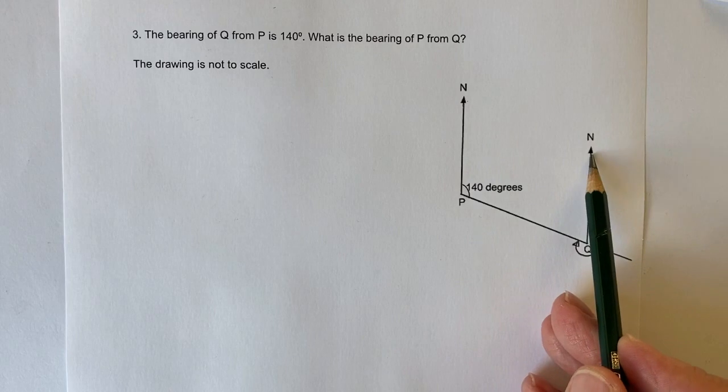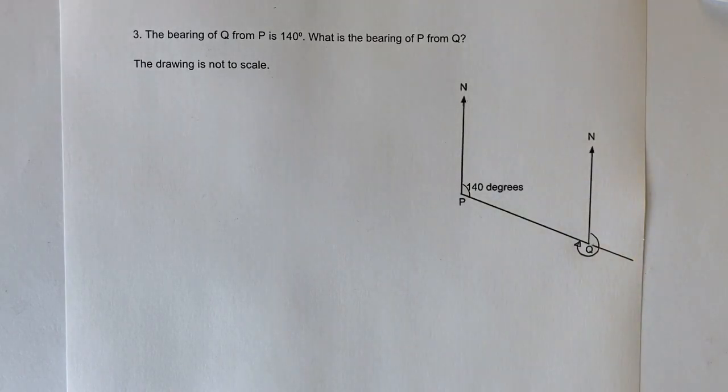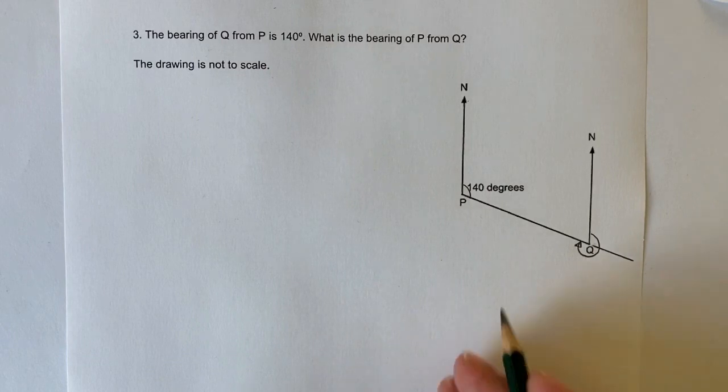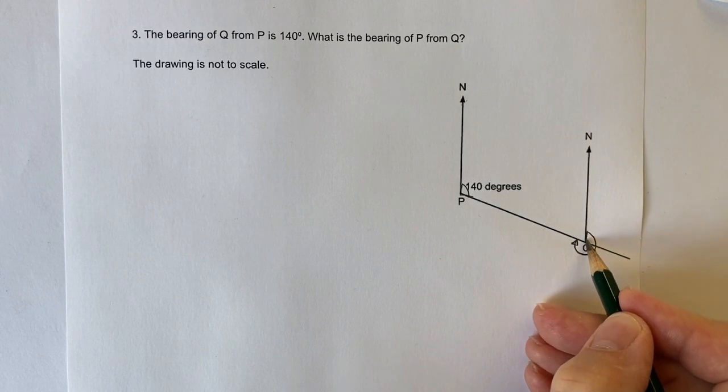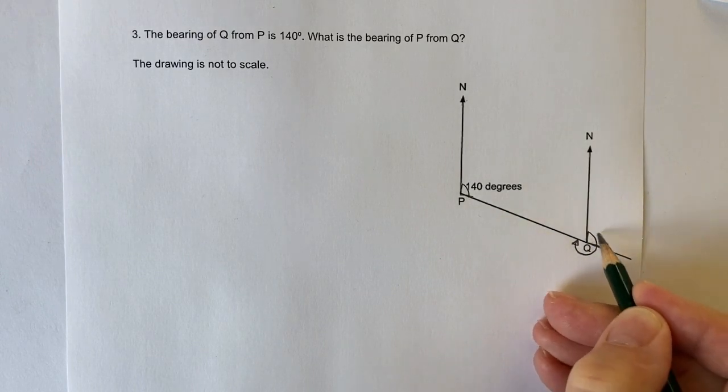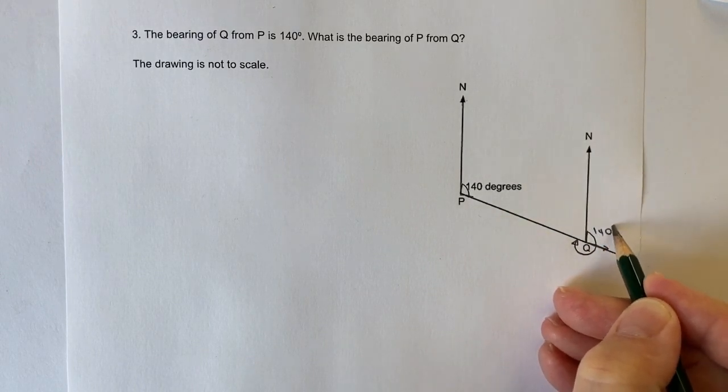So this north here and this north here is parallel to each other. So therefore, we can say that with corresponding angles, if this is 140 degrees, then also this is going to be 140 degrees as well.